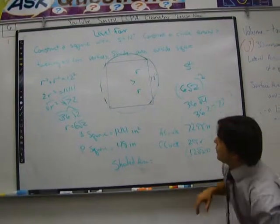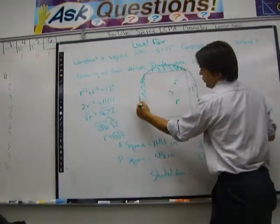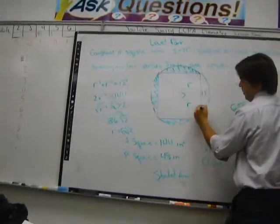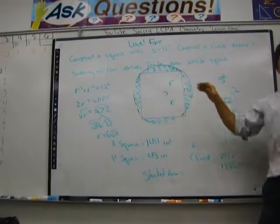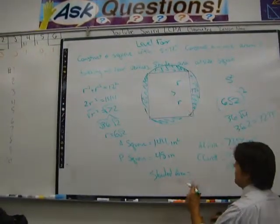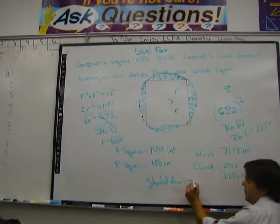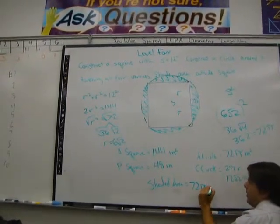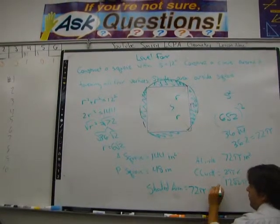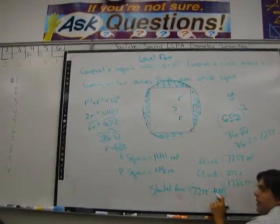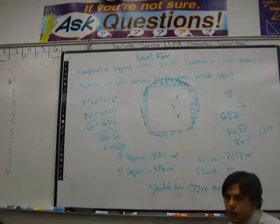And lastly, the shaded area. Well, we're supposed to shade the area outside the square. So, we're shading the difference between the circle and the square. So, the shaded area of this problem is going to be the area of the circle which was 72 pi, minus the square which was 144. 72 pi minus 144 inches squared is our answer.